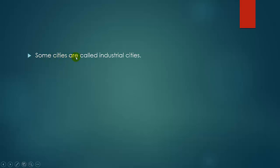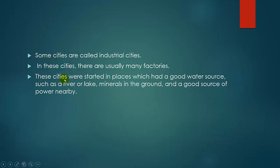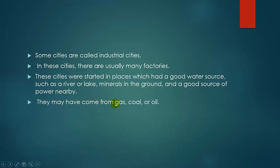Some cities are called industrial cities. In these cities there are usually many factories. These cities were started in places which had a good water source such as a river, minerals in the ground, and a good source of power nearby. They may have come from gas, coal, or oil.